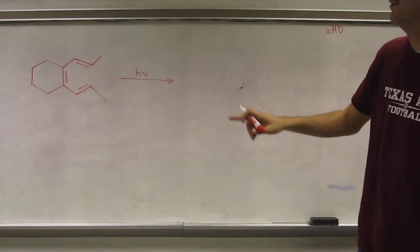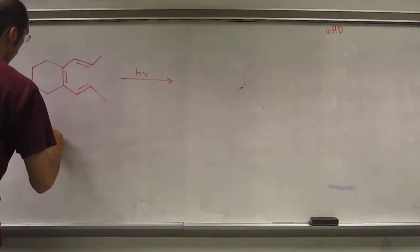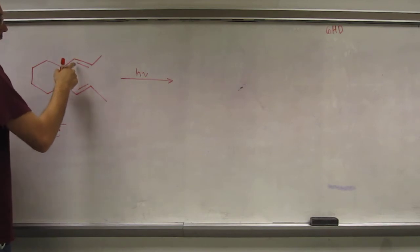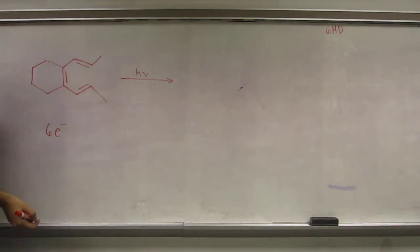So this is the 6 electron system, right? Because these pi electrons, these, and these are all going to rearrange.